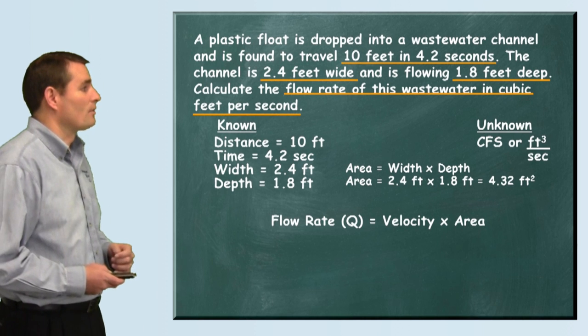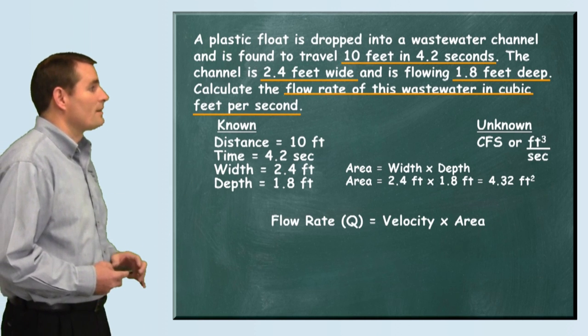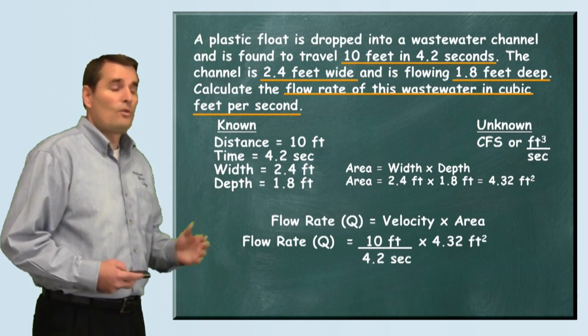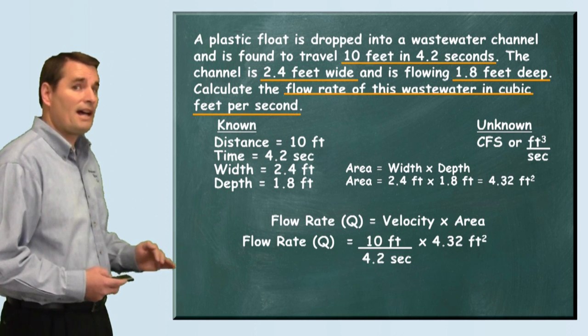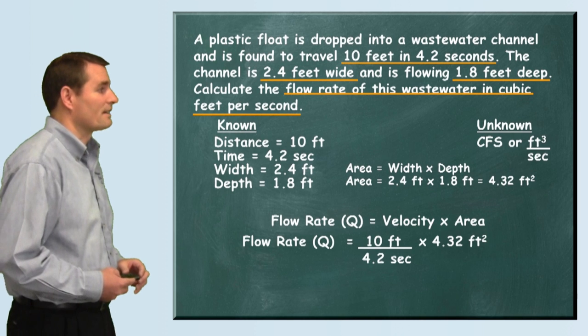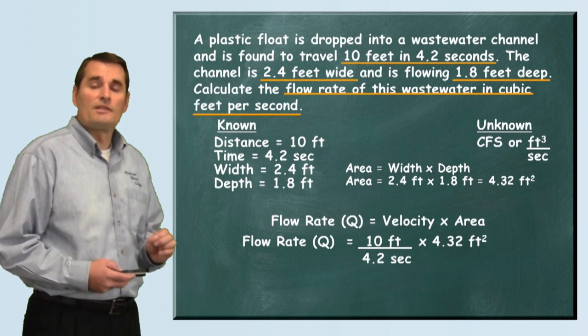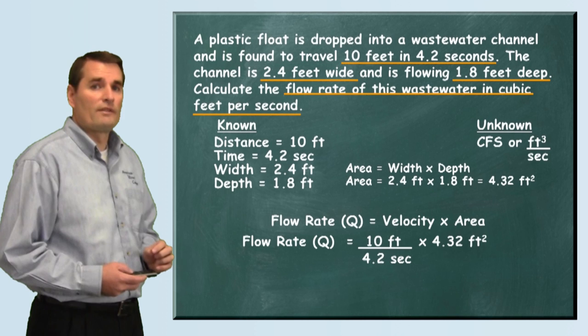Now we can use that to solve our problem. We plug in the numbers they gave us. Flow rate equals the 10 feet it traveled divided by the time, 4.2 seconds, multiplied by the area, 4.32 square feet.